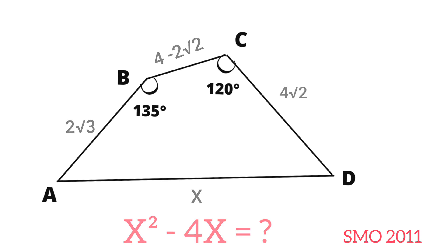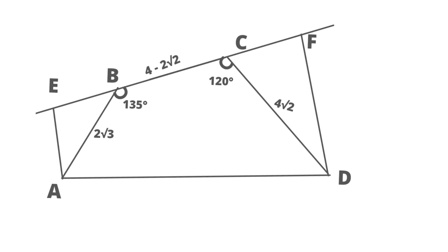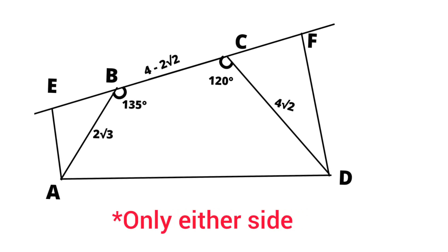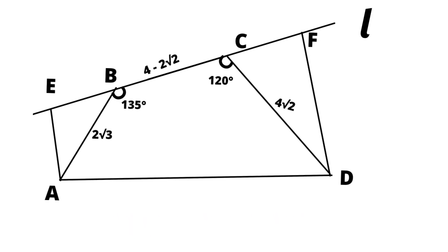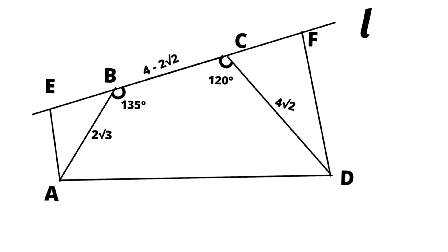To find the solution, let's extend line segment BC on either side. Let L be the line extended on either side of BC. We mark a point E on line L such that AE is perpendicular to L. Similarly, on the other side, we mark a point F such that DF is also perpendicular to line L.